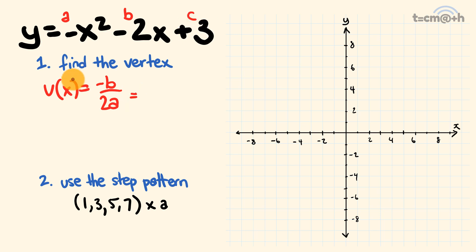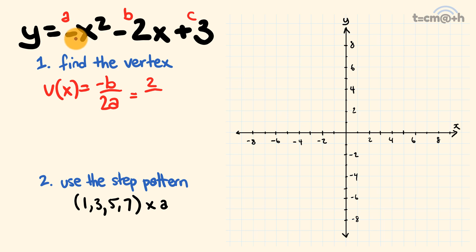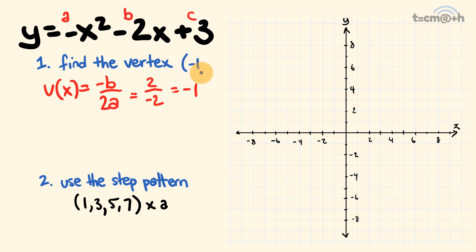Let's substitute in to find the x-coordinate of the vertex using negative b over 2a. Negative b: b is equal to negative 2, so negative negative 2 is equal to 2. Over 2a: a is equal to negative 1, so negative 1 times 2 is negative 2. 2 divided by negative 2 gives us negative 1. So the x-coordinate of the vertex is negative 1.